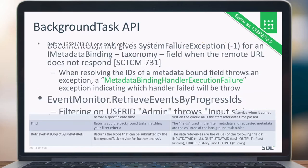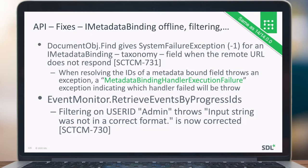On the API, we have done some fixes on the metadata binding. We found out during our implementation of the taxonomy sites connector that sometimes the URL was not responding and that gives some nasty system failure exceptions. We are now able to detect it and throw a metadata binding execution failure, and you can see which handler threw the exception. On the event monitoring, the filtering on the user ID that threw 'input string was not in the correct format' is now fixed.